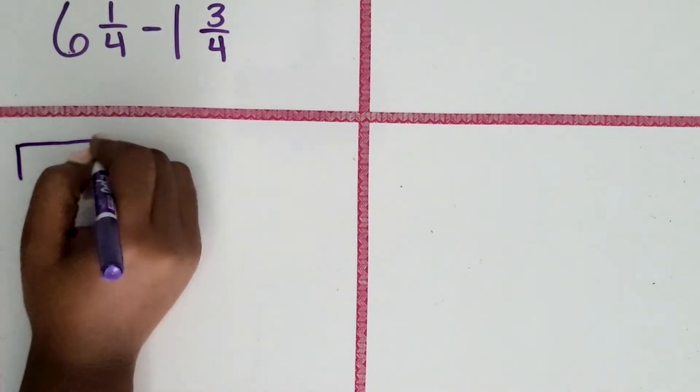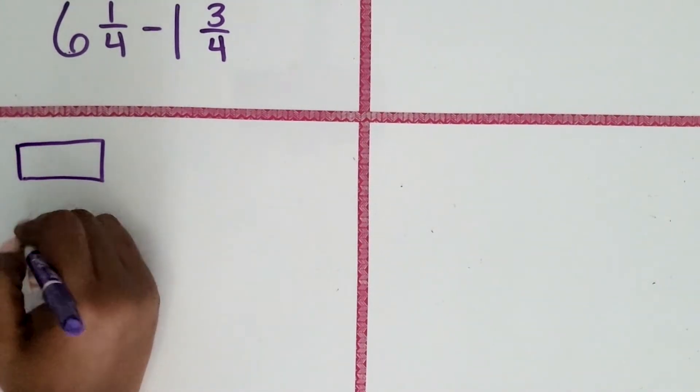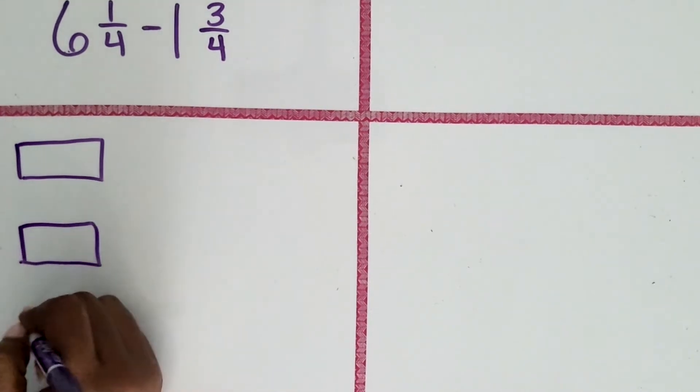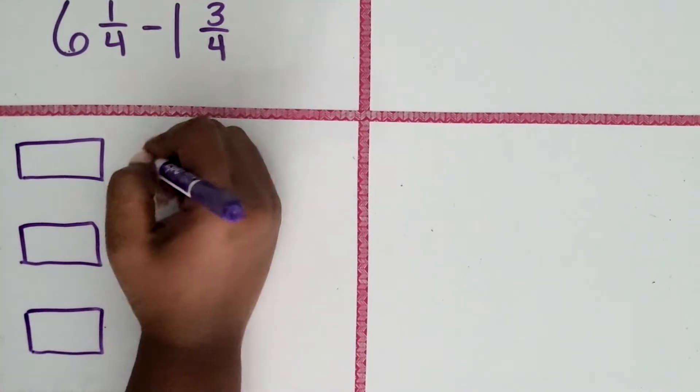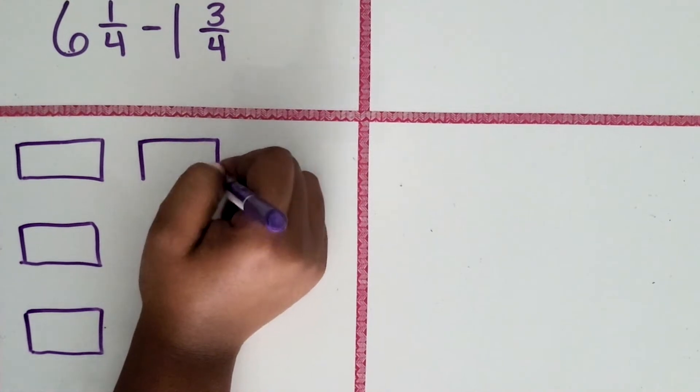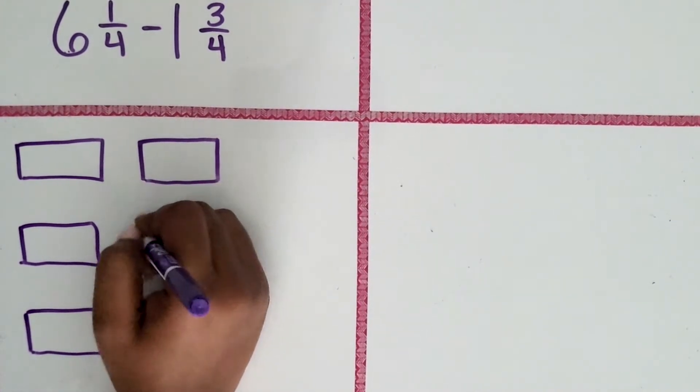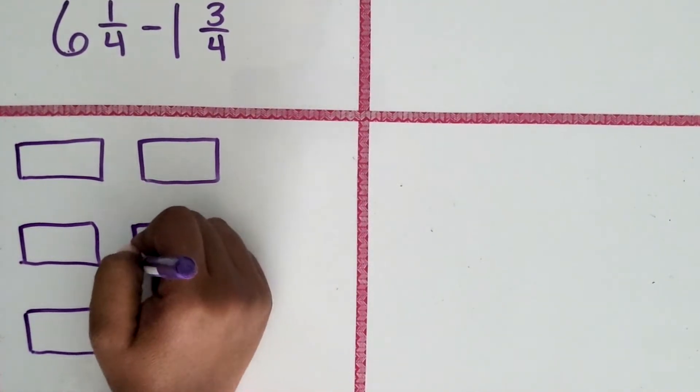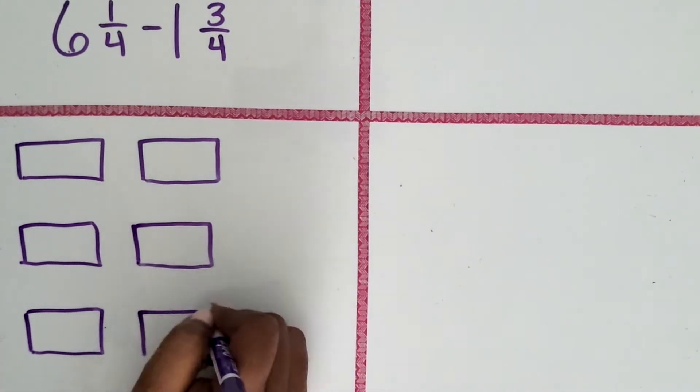If your students don't understand that way, we can think about it as a picture model. We can use representations. So here I'm drawing six bar models.